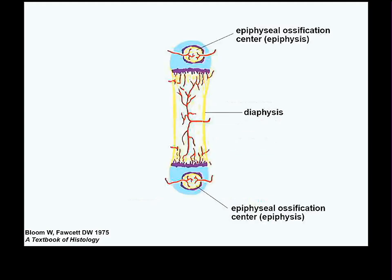As growth continues, cartilage is constantly being calcified and replaced by bone, so the bone appears to grow longer. At the very ends of the bone, a second zone of cartilage calcification, destruction, and replacement by bone appears — these are called epiphyses. So the diaphysis is the shaft bony element, and at each end you have new ossification centers called epiphyses: a proximal epiphysis and a distal epiphysis.